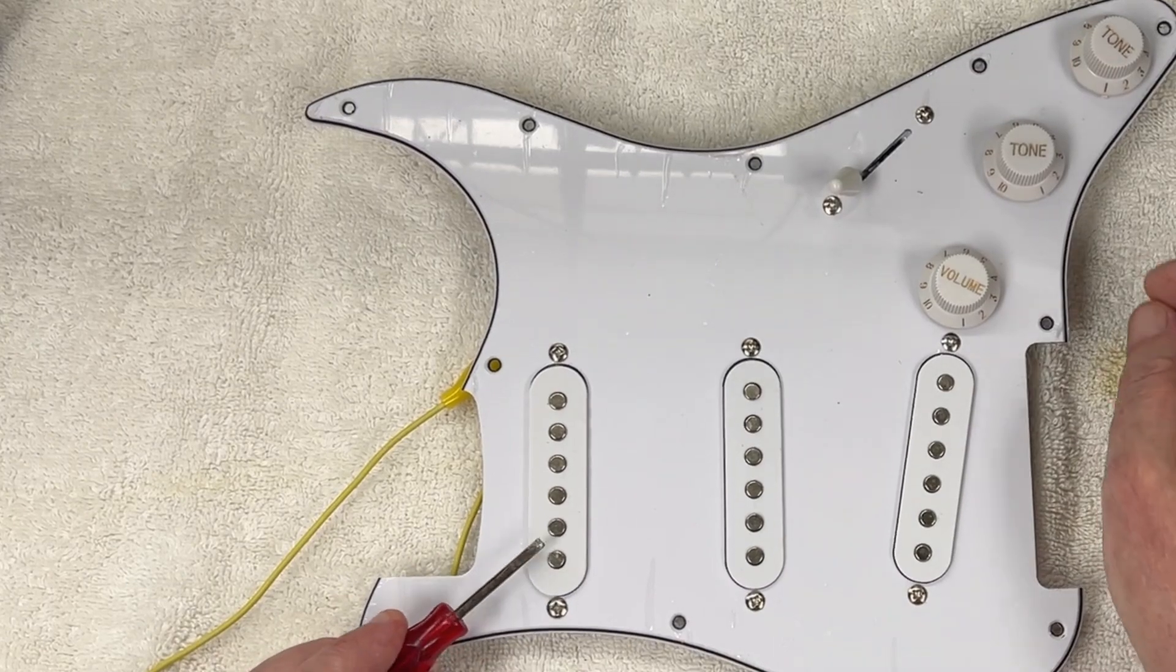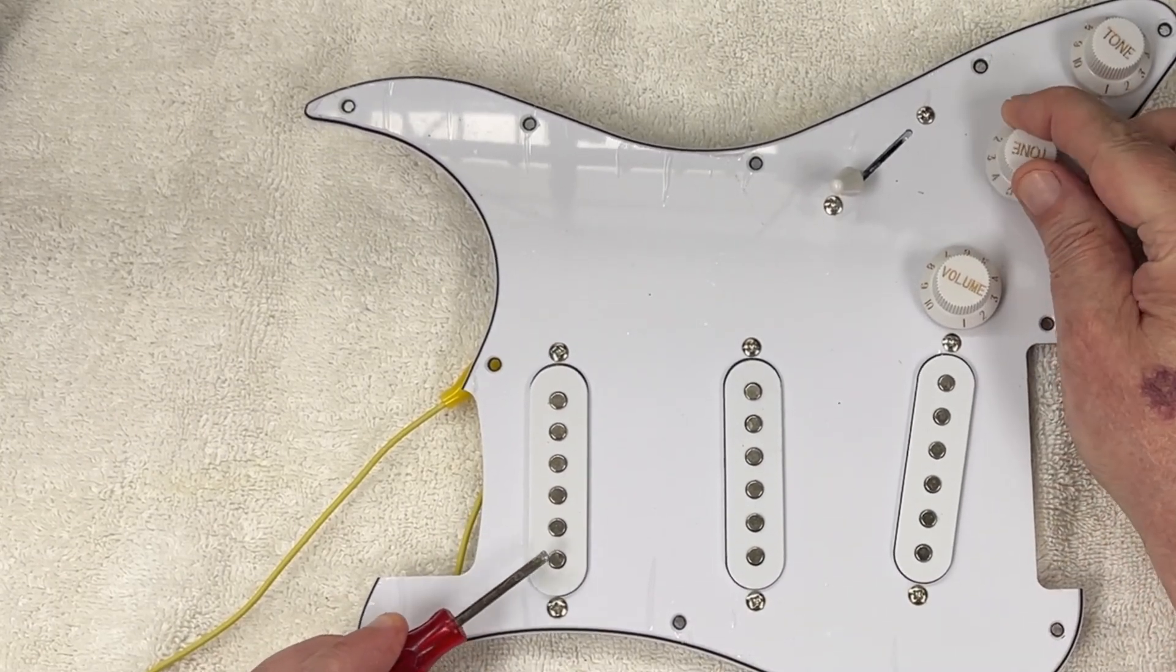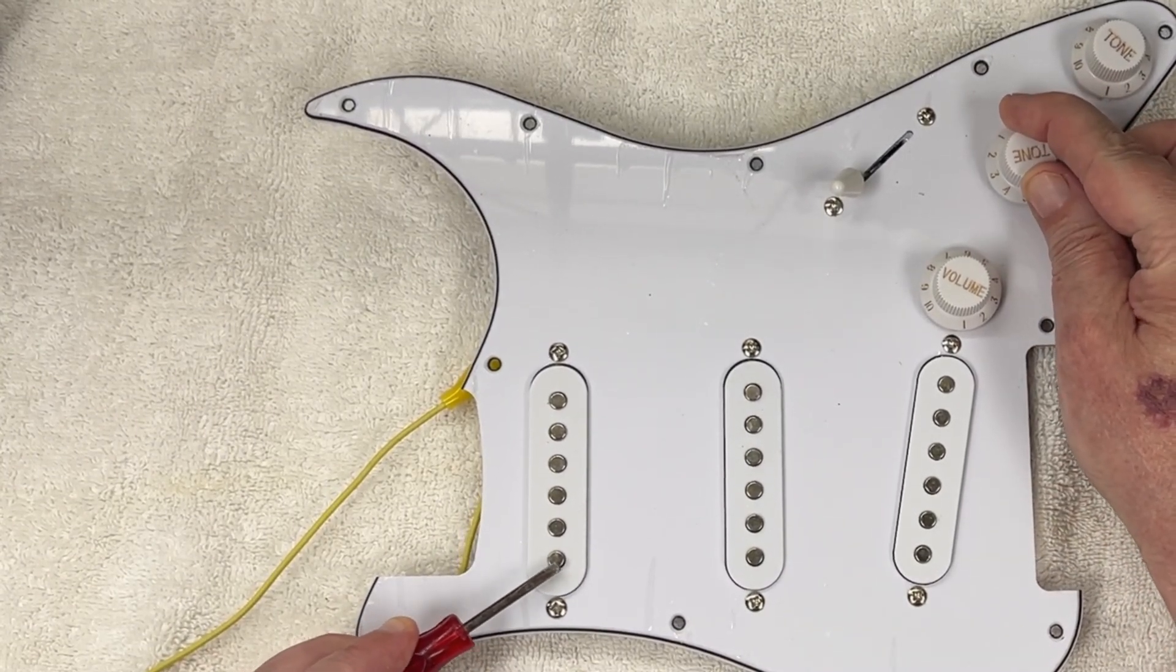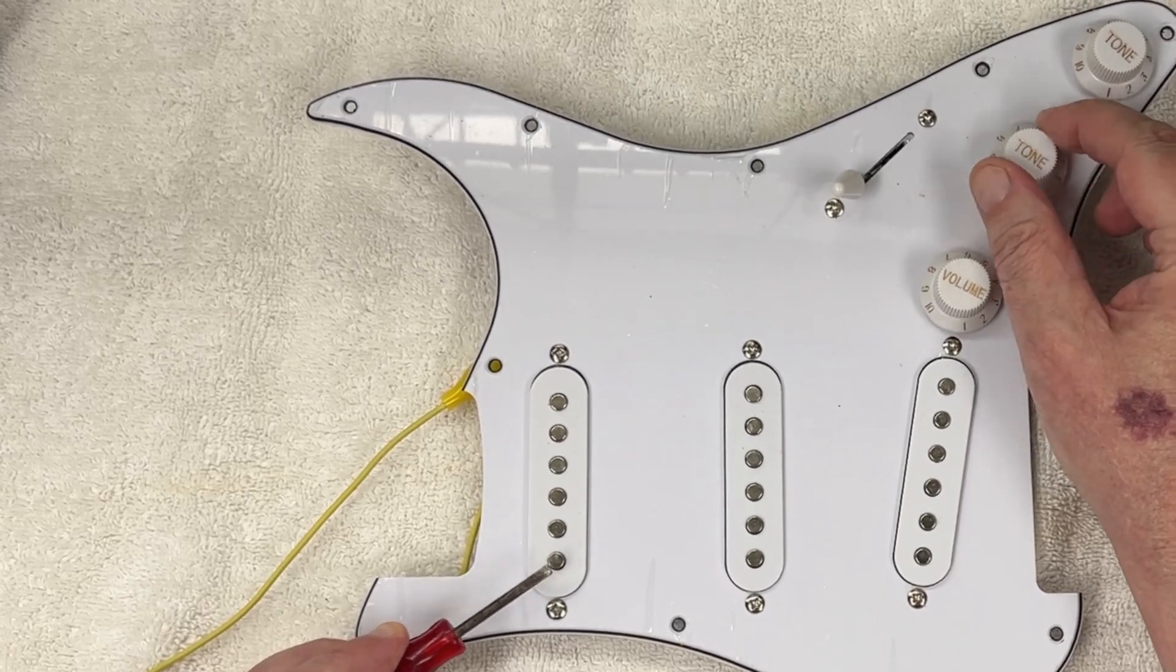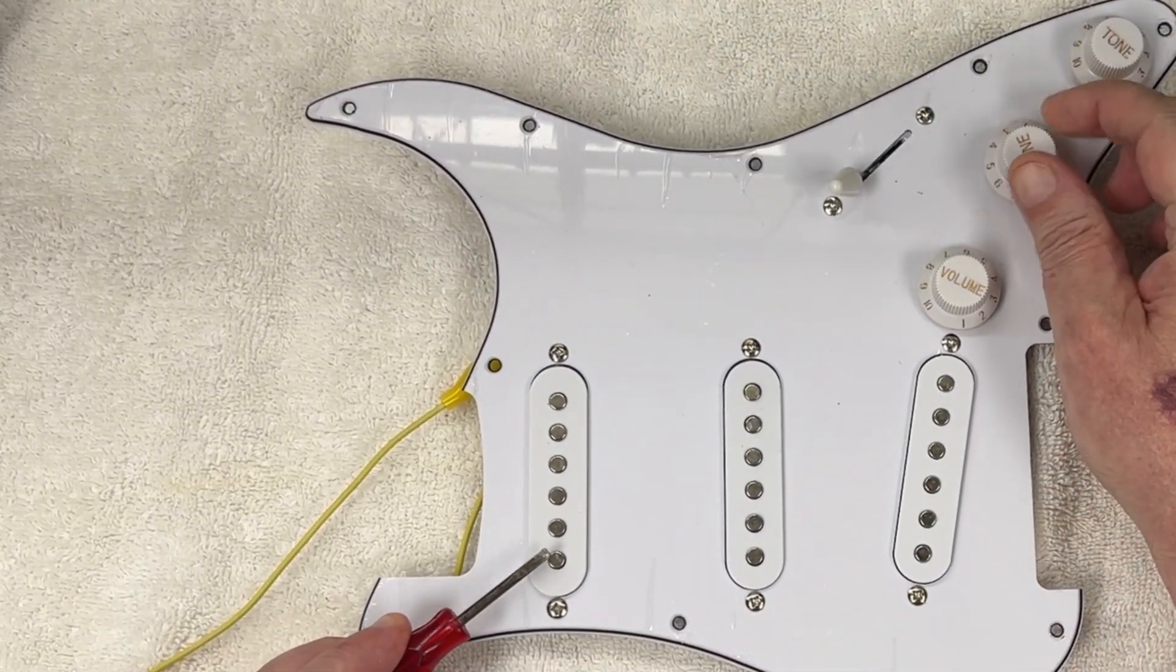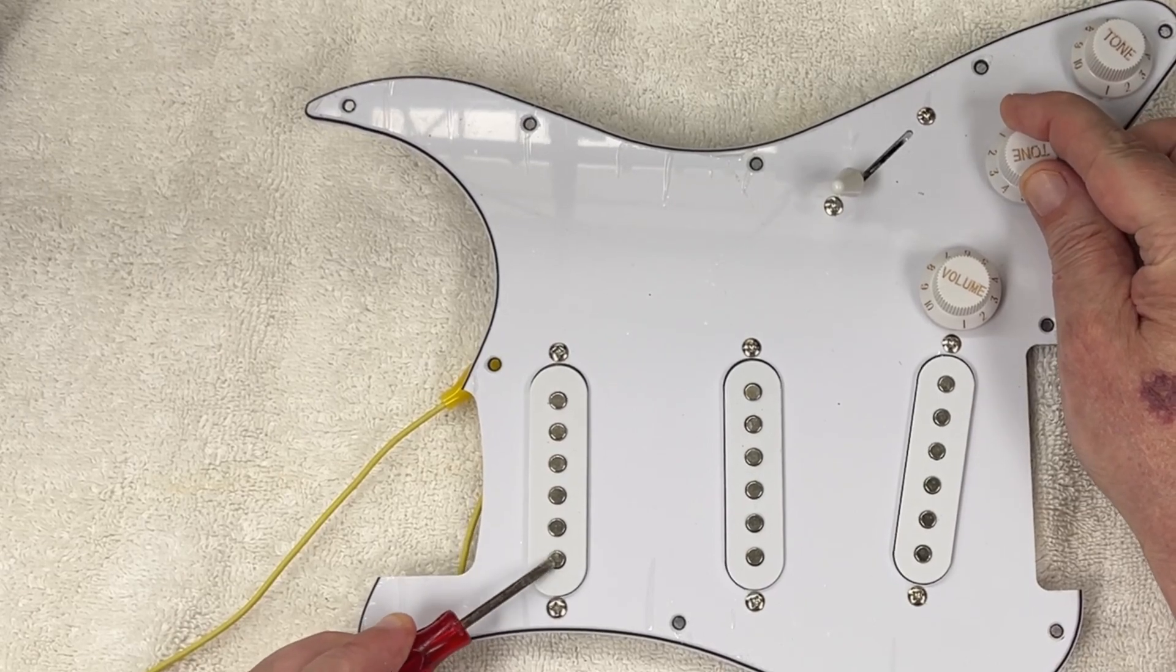The classic way of testing pickups without strings is to tap the pickups pole piece with a screwdriver. This results in a thud sound. The problem with that is it's often hard to test the tone control.